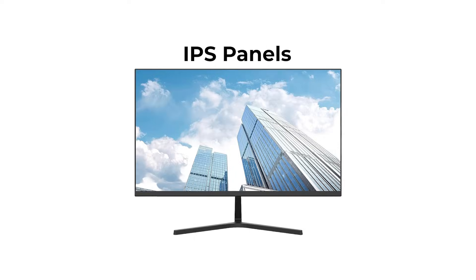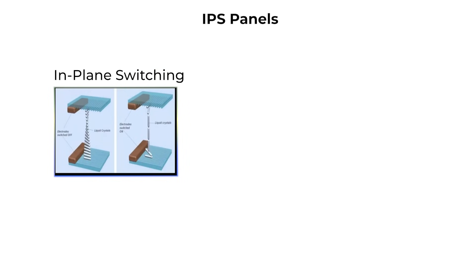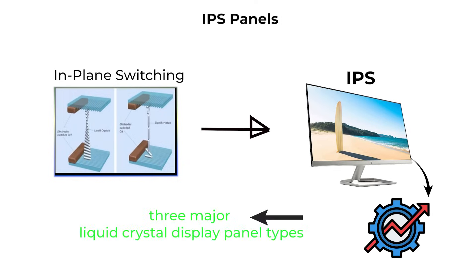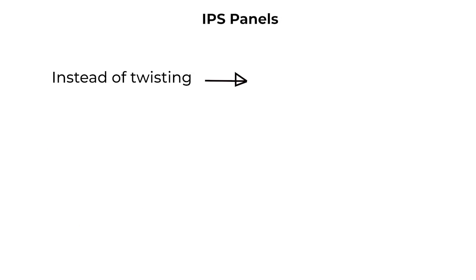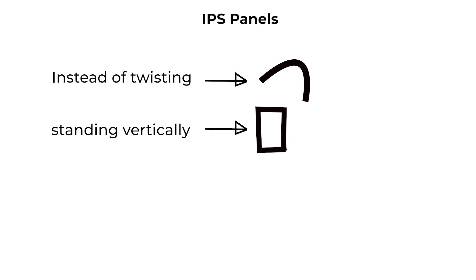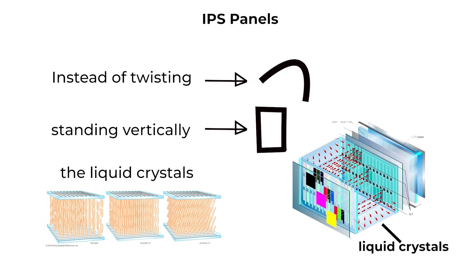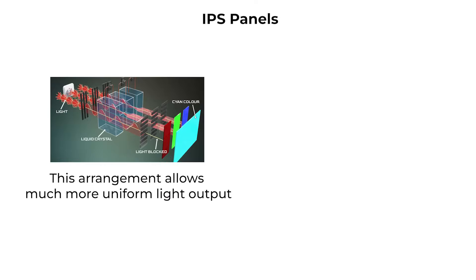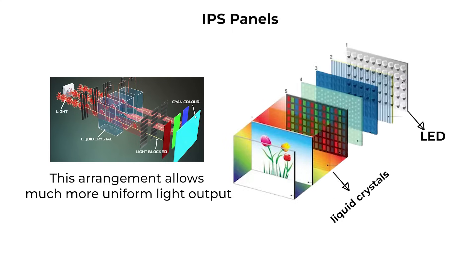IPS panels. In-plane switching, or IPS, is the most advanced of the three major liquid crystal display panel types. Instead of twisting or standing vertically, the liquid crystals in IPS panels are aligned parallel to the glass layers of the screen. When voltage is applied, they rotate within that plane to control light. This arrangement allows much more uniform light output, which directly improves color accuracy and viewing angles.